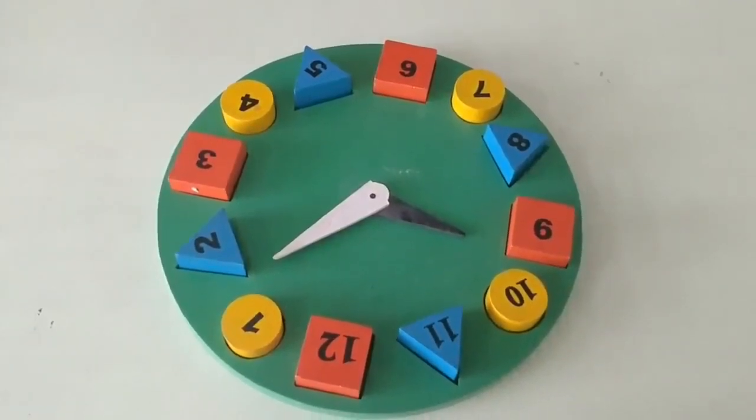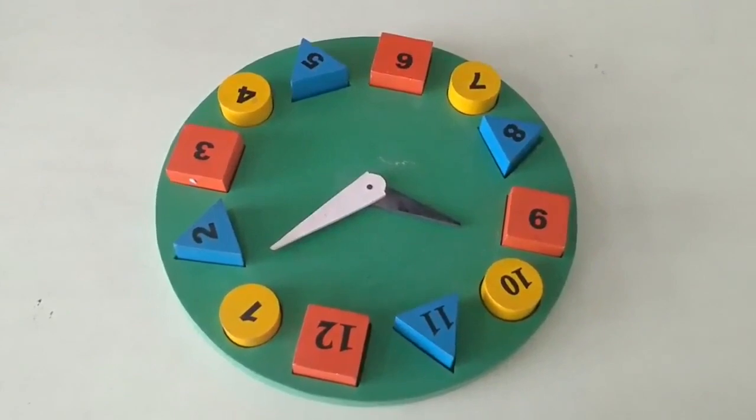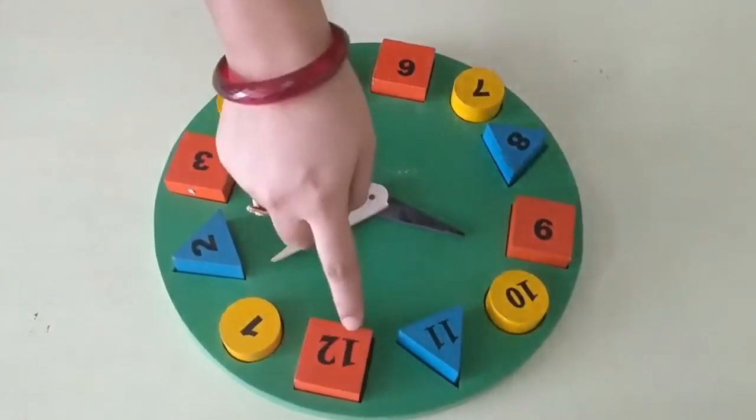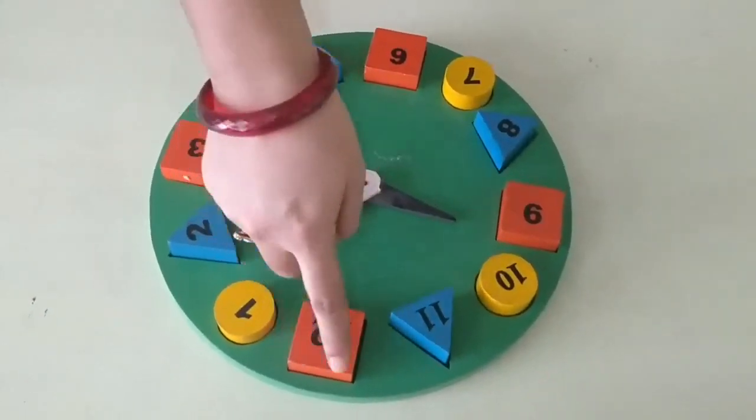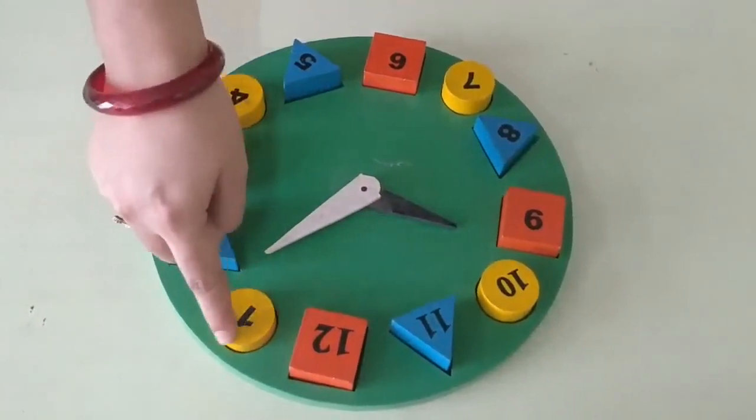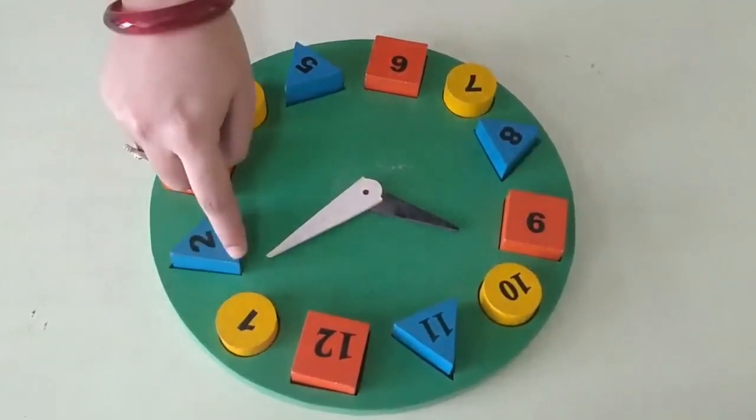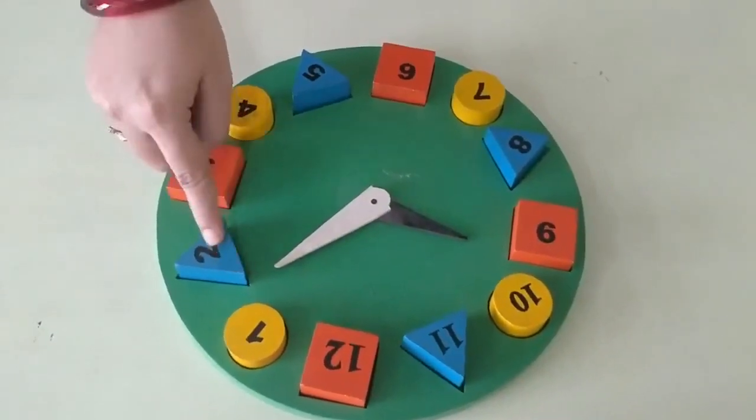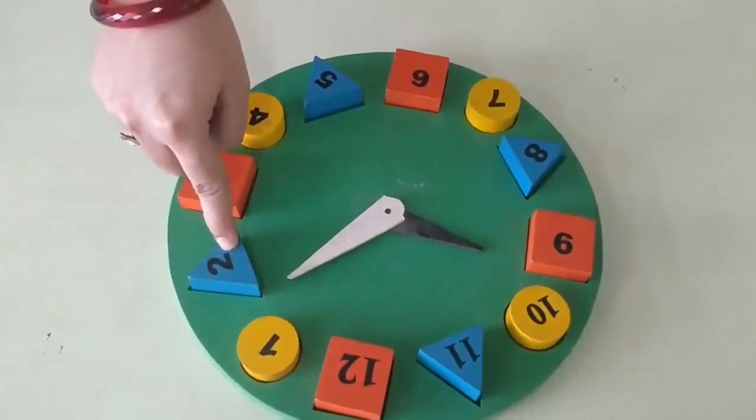And one more pattern is being formed here. That is you can see here the faces of these numbers. It is a square. Number twelve. Number one is a circle. And number two is a triangle. We have already learnt about shapes.